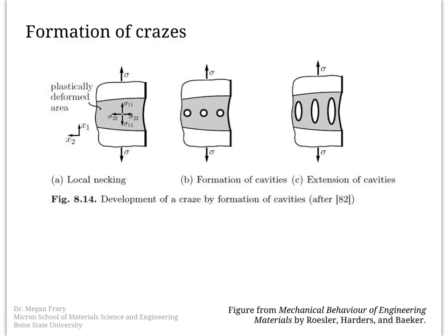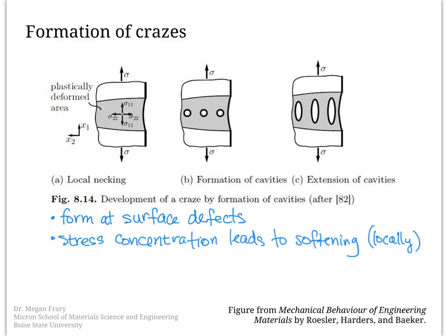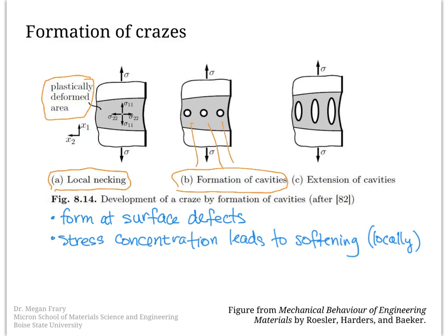Crazes typically form at surface defects such as scratches or impurities. Because of these stress concentrations, the material will soften slightly just at that point. As a result of this stress concentration and softening, plastic deformation will occur around that area. Then there's a slight local necking at the point where plastic deformation is being concentrated. The stress state goes up there and generates the formation of cavities — individual cavities forming locally in the material, on the order of maybe a few nanometers.